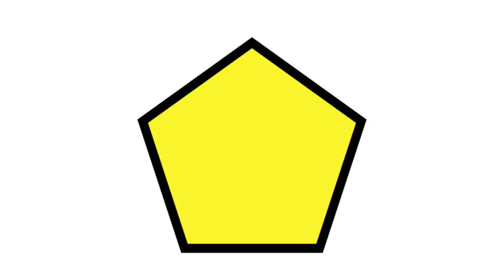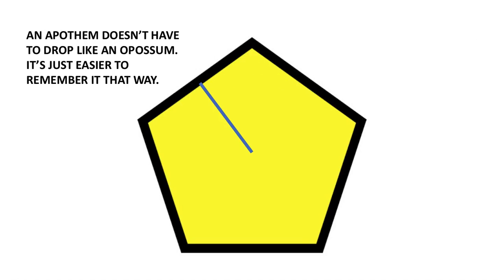The apothem drops straight down just like an opossum, whereas the radius goes to a corner. The opossum analogy is just a way to help remember what the apothem is. You can have an apothem that doesn't drop straight down — as long as it goes from the center of the polygon straight to the middle of one of the sides of your regular polygon, you are dealing with an apothem. It's just easier to remember as something hanging straight down. In the formulas we'll be using, the apothem is actually much more important than the radius — it's going to be more useful when we talk about area.